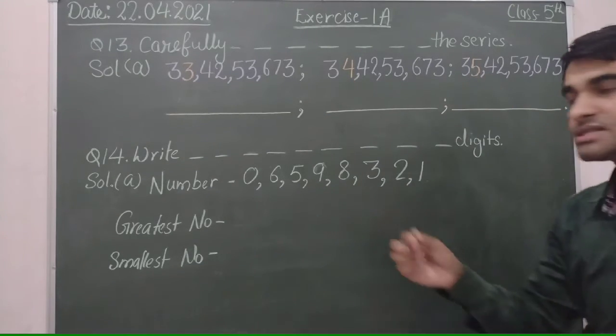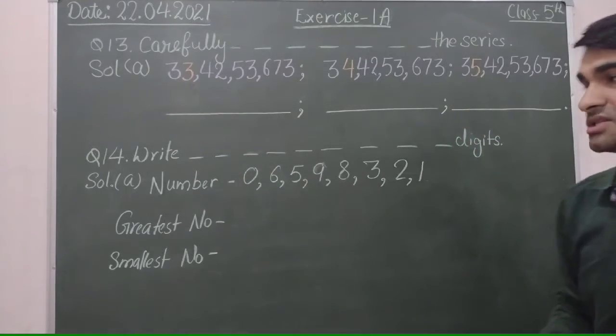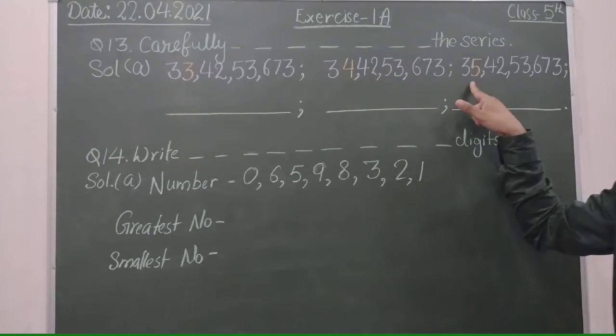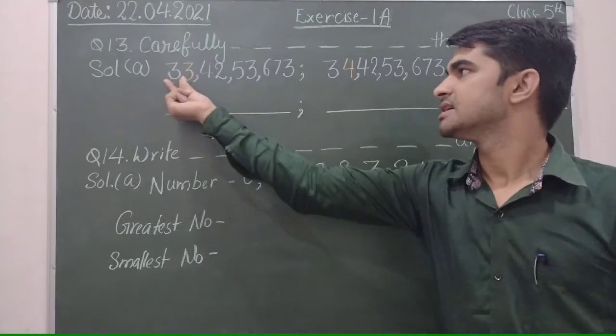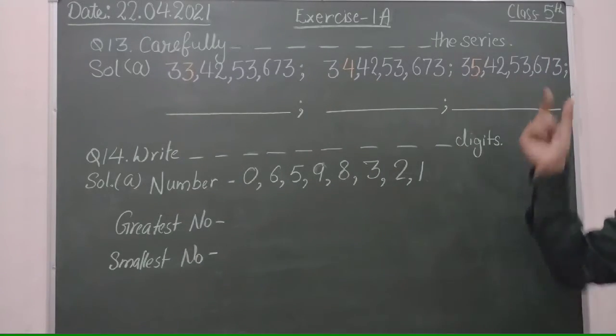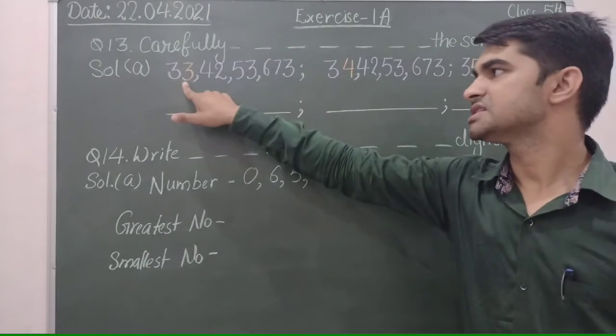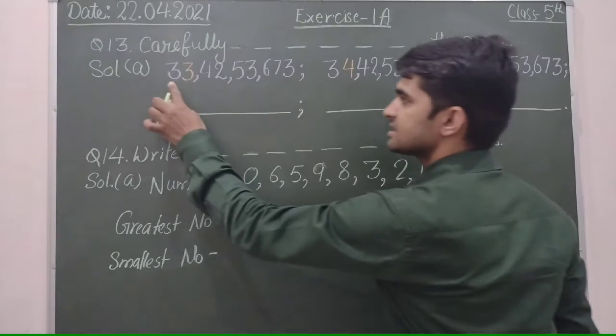It means only crore place is changing - four and five - and the rest digits are the same. So it means we will only change the crore place. We can write it like this: 33, 34, 35.